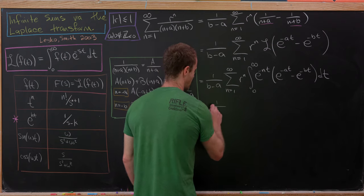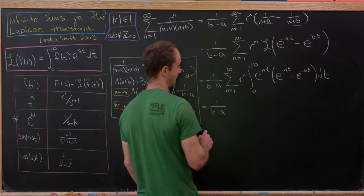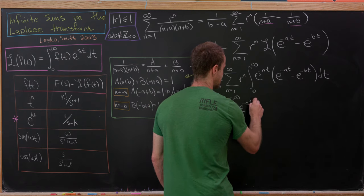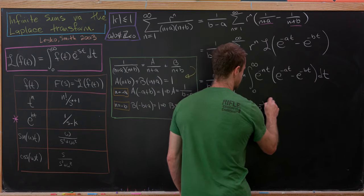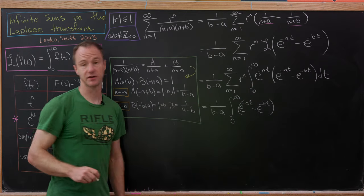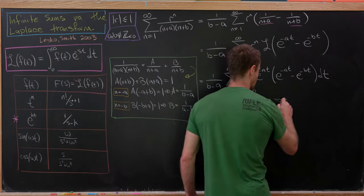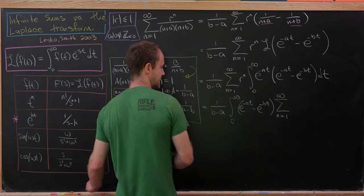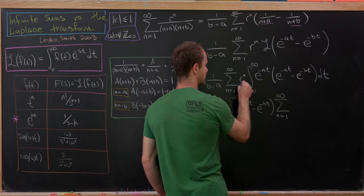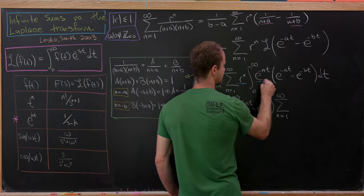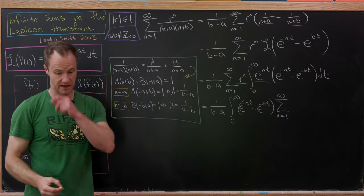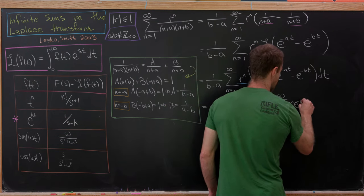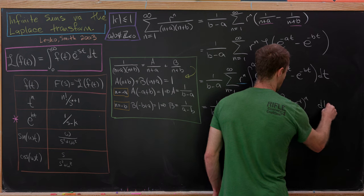After exchanging, we get 1 over (b minus a) times the integral from 0 to infinity of (e to the minus at minus e to the minus bt) — which doesn't depend on n — times the sum as n goes from 1 to infinity of r times e to the minus t, all raised to the n, dt. This is a geometric series with ratio r times e to the minus t.